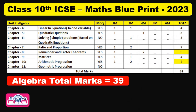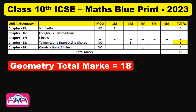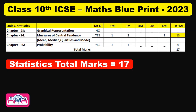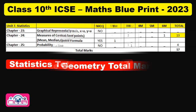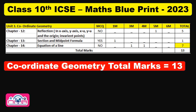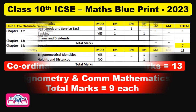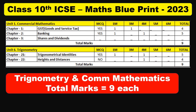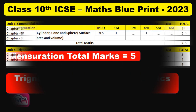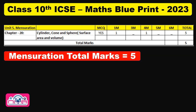Algebra got a maximum of 39 marks, Geometry had 18 marks of questions, Statistics had 17 marks, Coordinate Geometry had 13 marks, Trigonometry had 9 marks, Mensuration had 5 marks, and GST and Banking together had 9 marks questions.